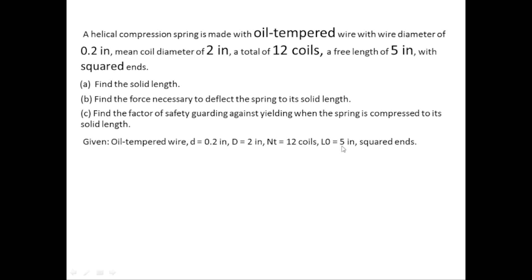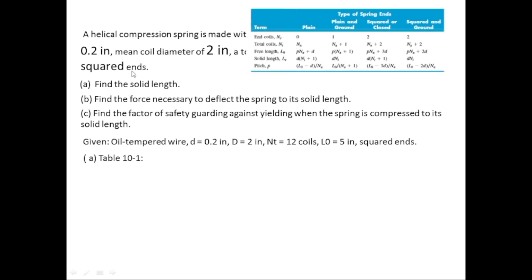Here is the given data for this problem. Let's find LS first using table 10.1. Locate the third column of square or closed spring where LS equals D times NT plus 1. The second row is for total number of coils, so NT equals NA plus 2.